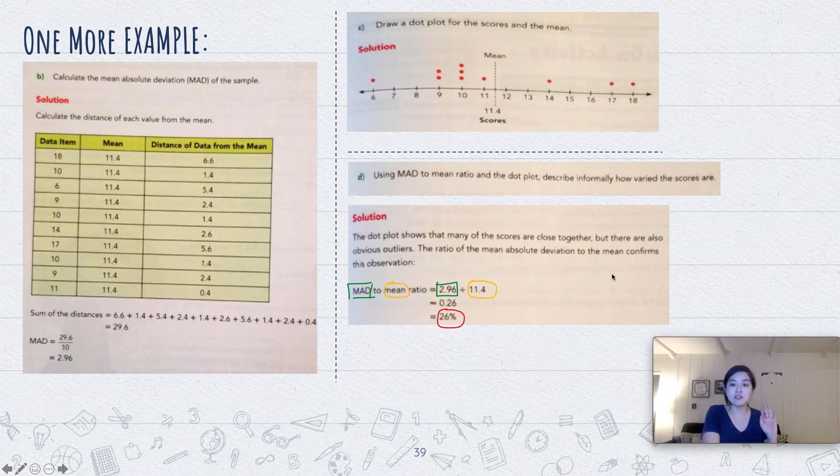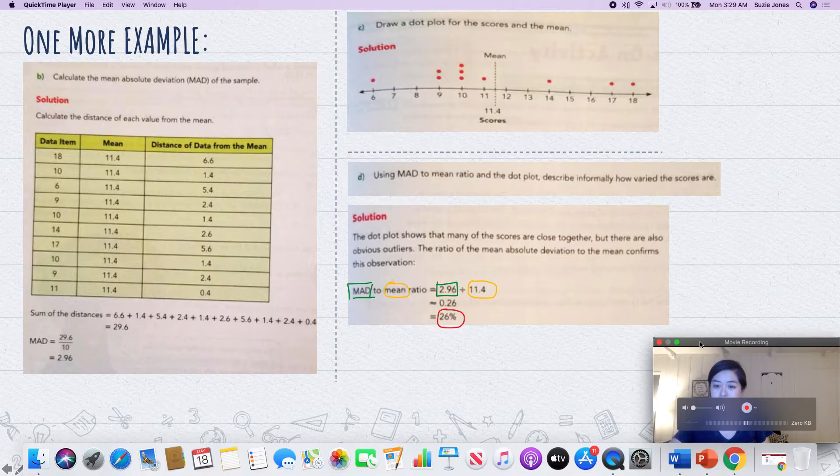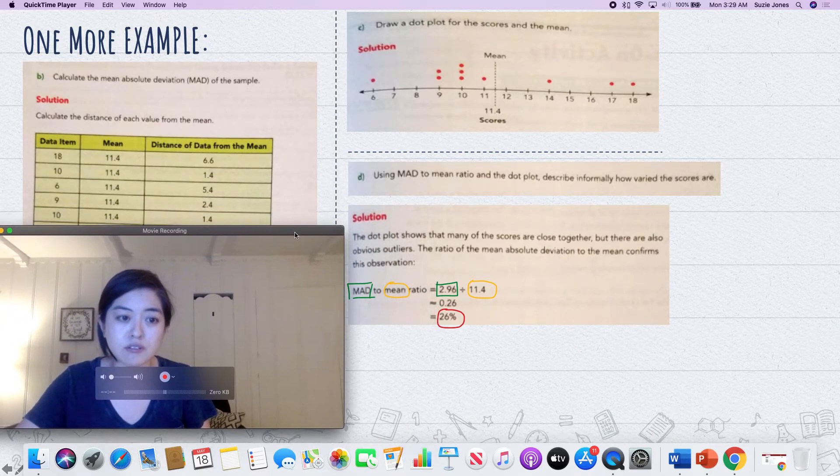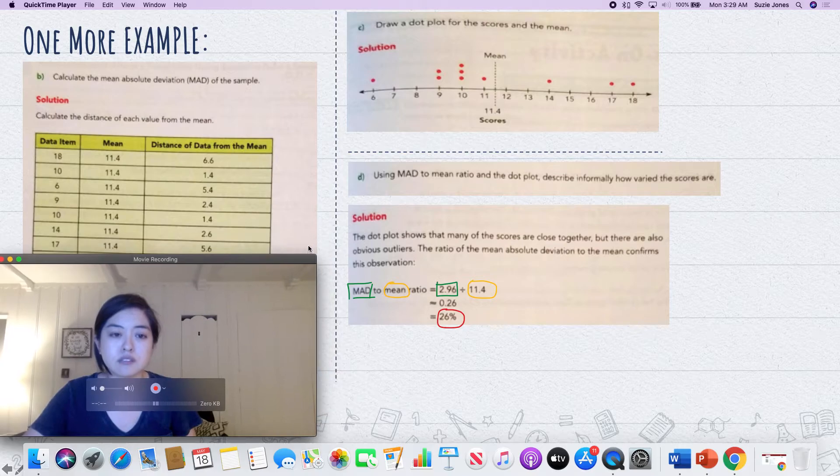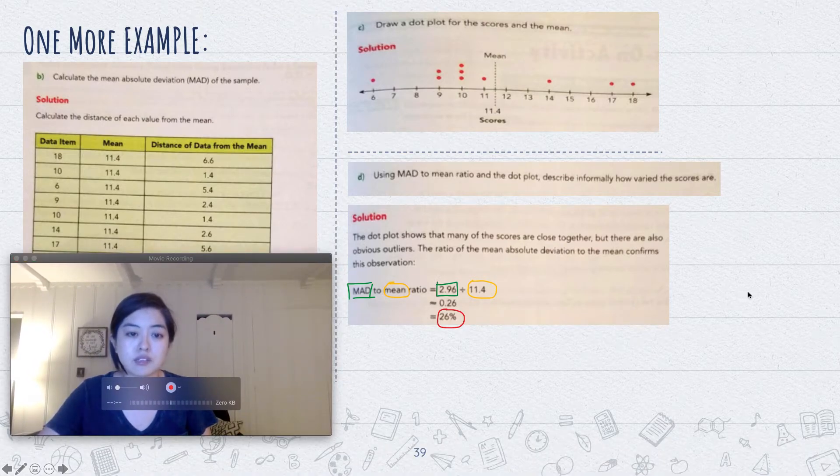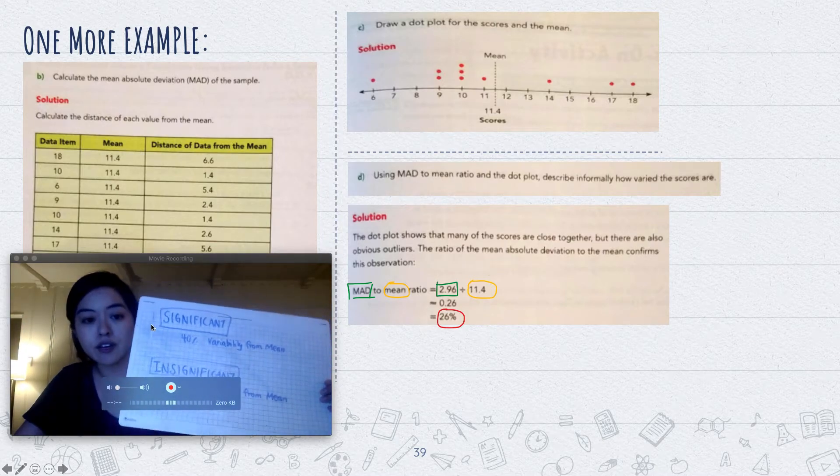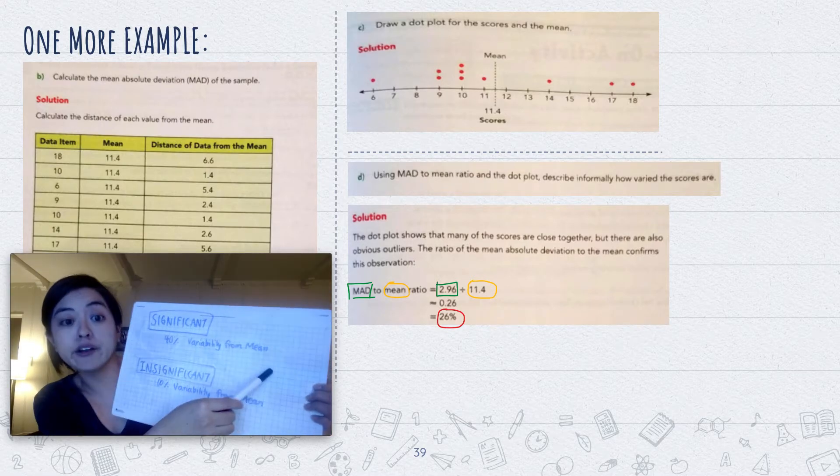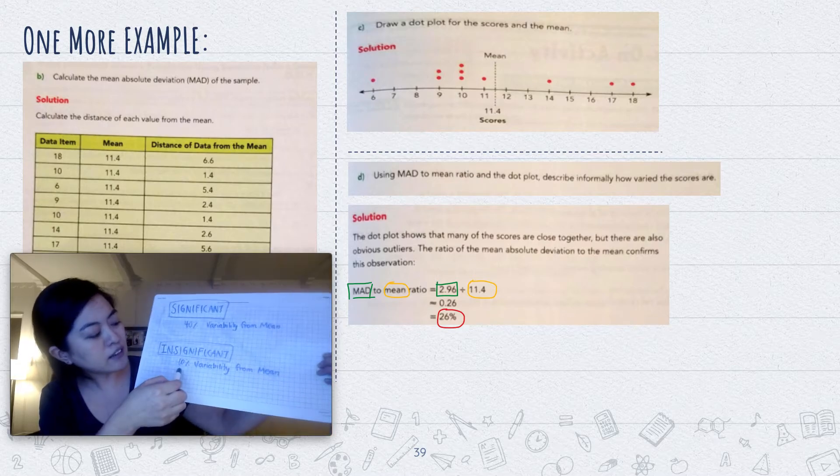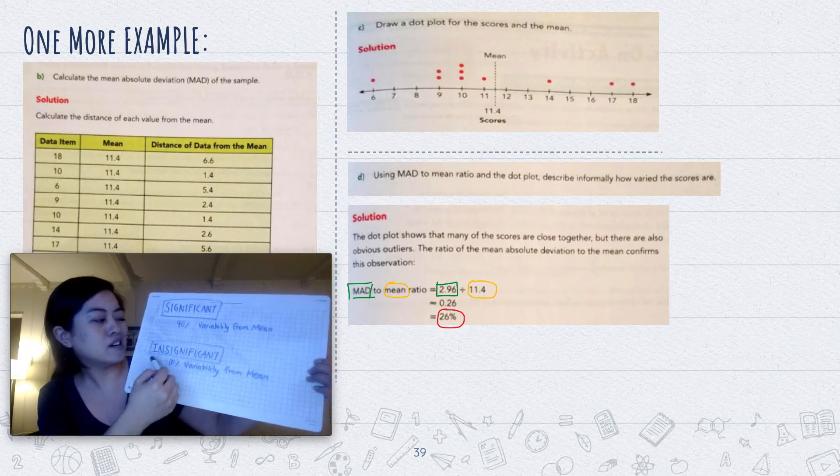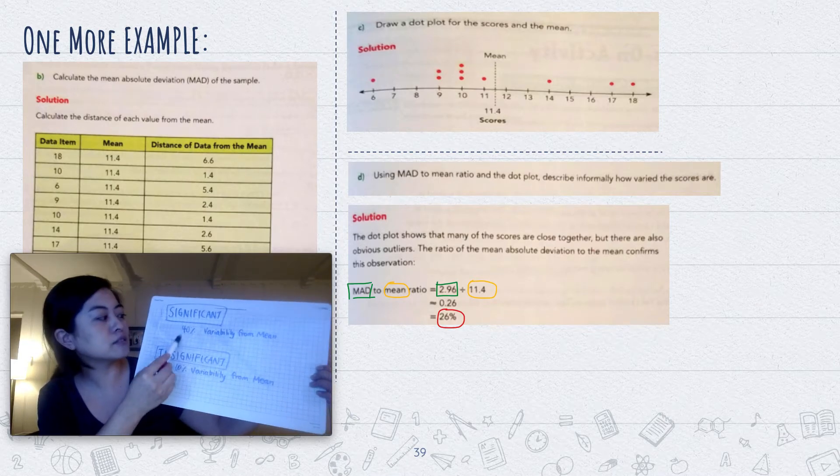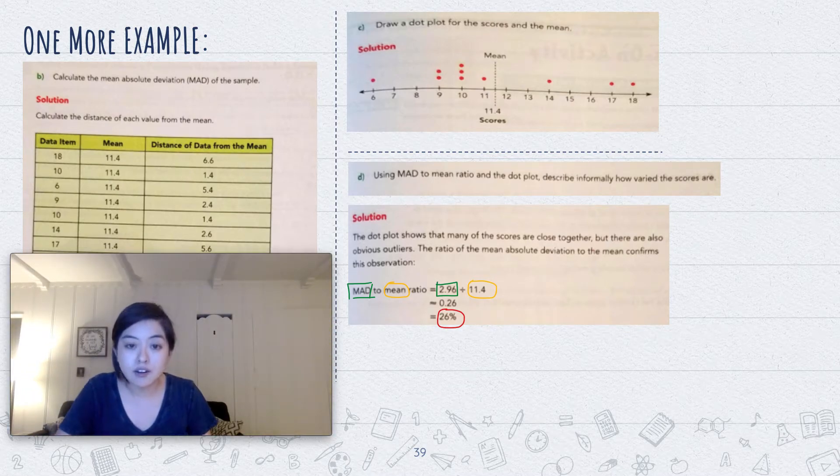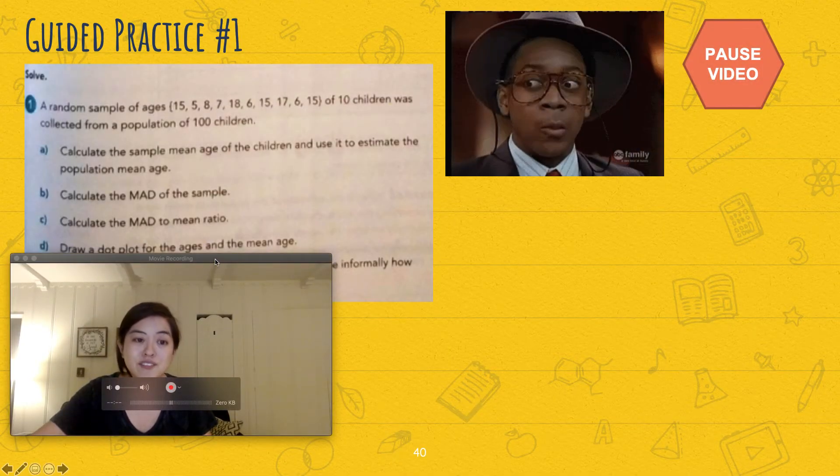Now, a good rule of thumb is this: if you get 40% variability from the mean or higher, then that's very significant. If you get 10% variability from the mean or lower, well that's insignificant. And 26% seems to lie between these two; it shows some variation. All right, so now I would like for you guys to do this on your own. Please try to complete number one on your own, and remember that if it shows 40% variability from the mean, that's significant, and if it shows 10% variability from the mean, that's insignificant.